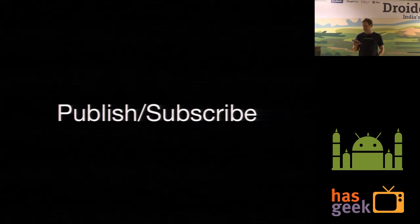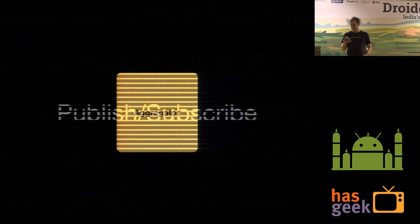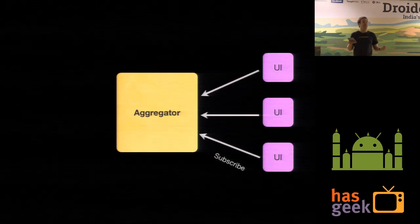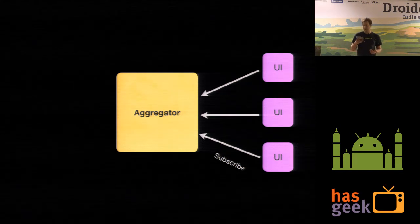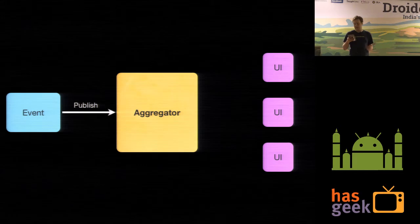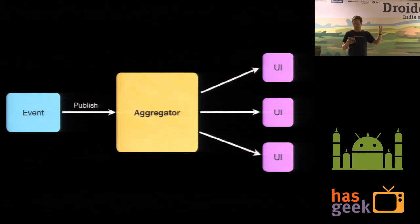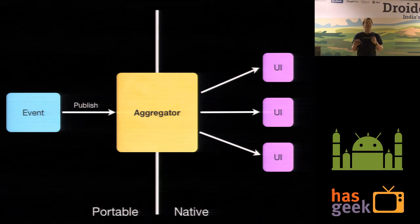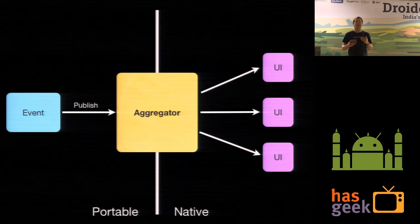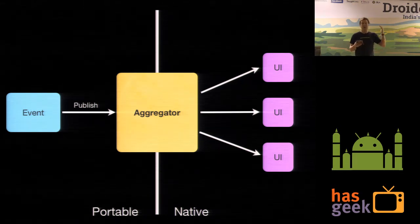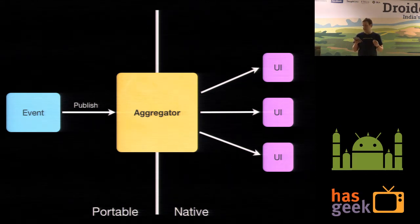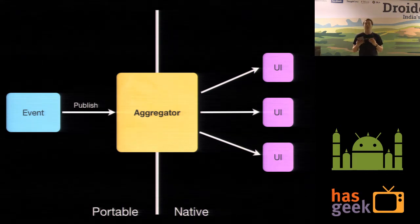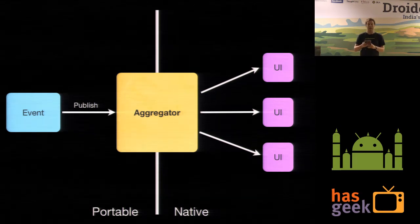Another pattern that we've adopted at AztecDocs is to use a publish-subscribe event-passing model. We have an aggregator — bits of UI tell the aggregator that it has an interest in certain types of events. When an event occurs somewhere in the app, we publish that event to the aggregator and that tells all the UI aspects about the event. In practice, events get raised on the portable side and listened to on the UI side, which means the aggregator itself becomes the interface between the portable code and the native code. This means the only things that need to be wrapped are the aggregator itself and the different types of events you pass across the interface. This approach reduces a lot of coupling between the UI and the portable logic.